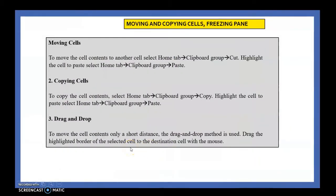Next, moving and copying and freezing the pane. For moving and copying, we use the Home tab's Clipboard group. For moving, we use Cut and Paste. For copying, we use Copy and Paste. There is also the drag and drop method — if you want to move cell content a short distance, you can use drag and drop.